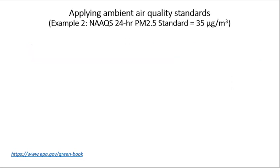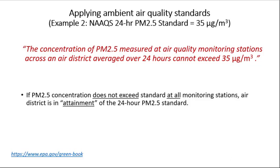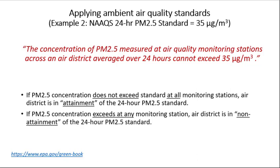Taking the 24-hour PM2.5 NAAQS standard of 35 micrograms per cubic meter: this means PM2.5 concentrations averaged over 24 hours cannot exceed 35 micrograms per cubic meter. If PM2.5 does not exceed the standard at all monitoring stations in an air district, the district is in attainment of the 24-hour PM2.5 standard. If concentrations exceed 35 micrograms per cubic meter at any monitoring station, the district is in non-attainment of the 24-hour PM2.5 standard.